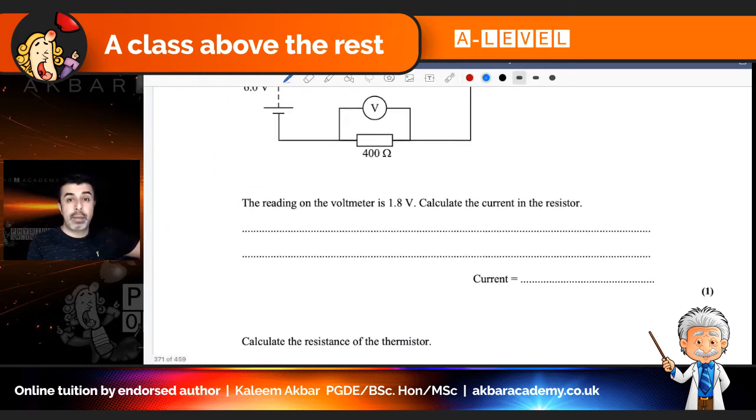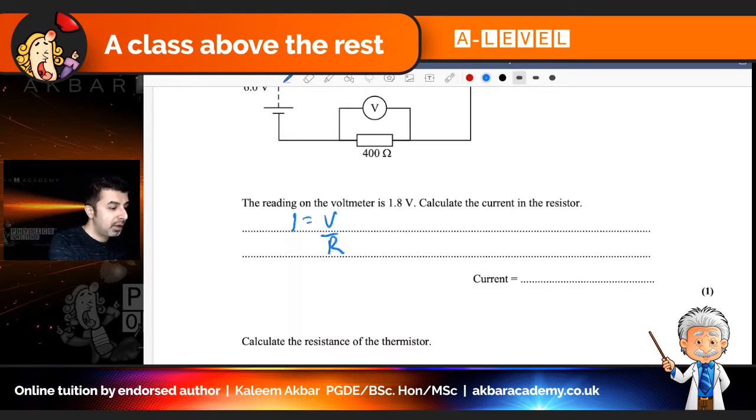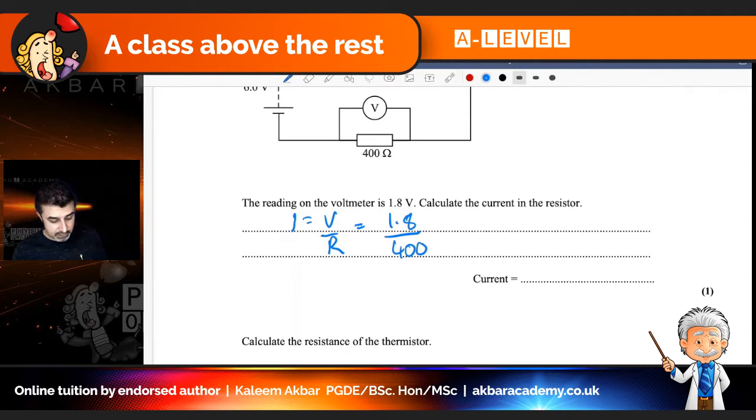So remembering Ohm's law, I equals V over R, which is 1.8 over 400. And if I stick that in my calculator, I get 4.5 times 10 to the minus three amps. So in other words, 4.5 milliamps.